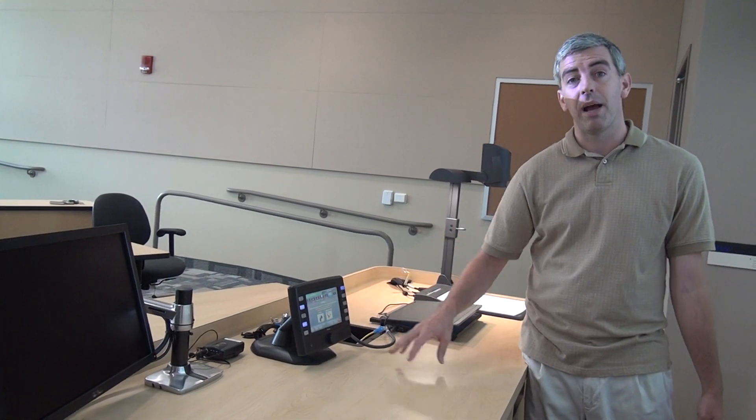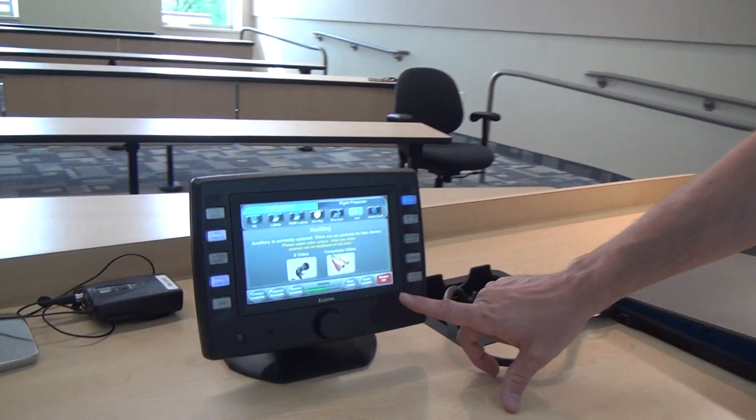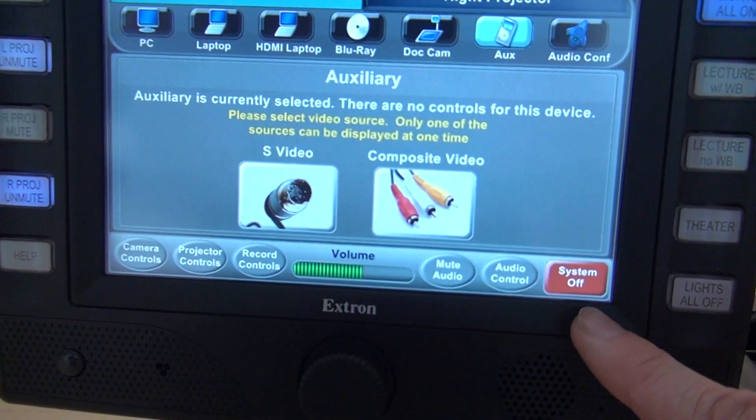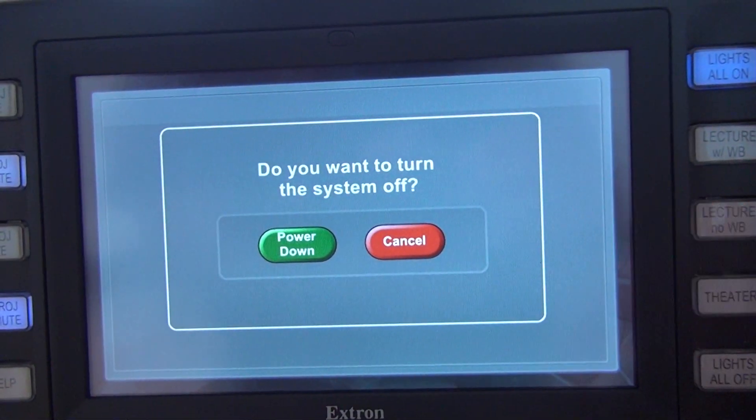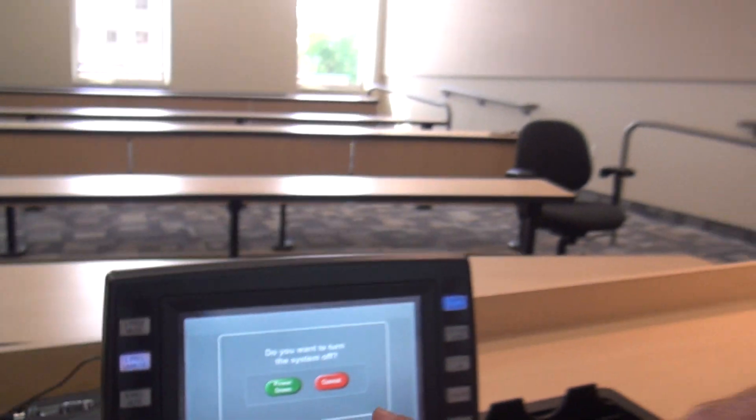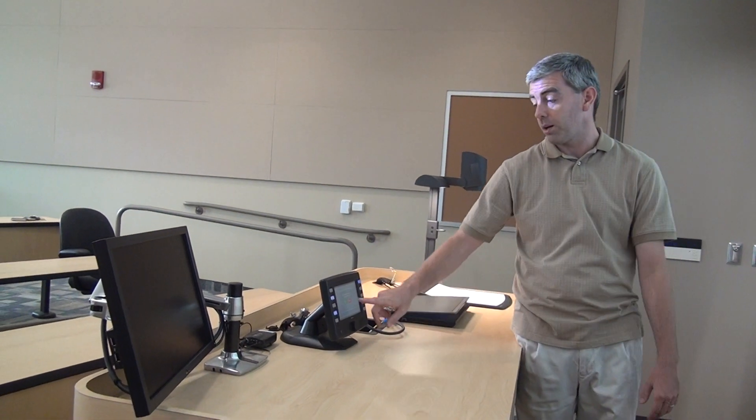I'm going to hit OK, that's going to get me back to my main screen. On the bottom right hand corner there is a button labeled system off. When I hit system off it's going to ask me if I'm sure I want to power down. When I click that power down button it's going to power down both the projectors, which is important so we save the life of the projector bulbs, and it's going to bring the screens back up into the ceiling.